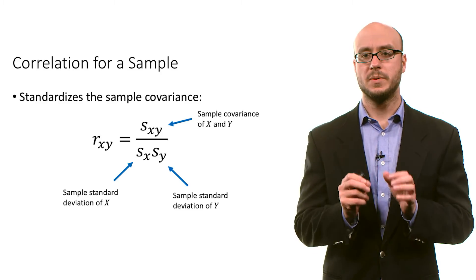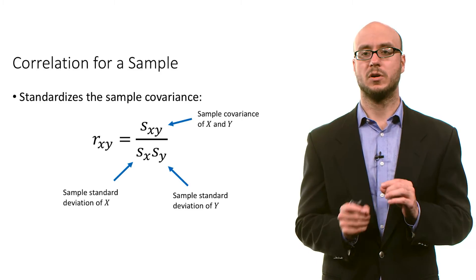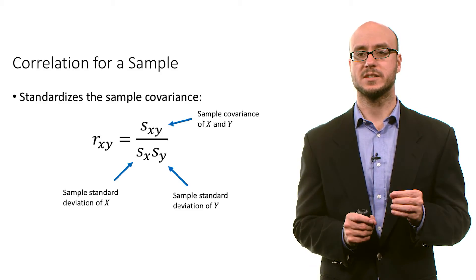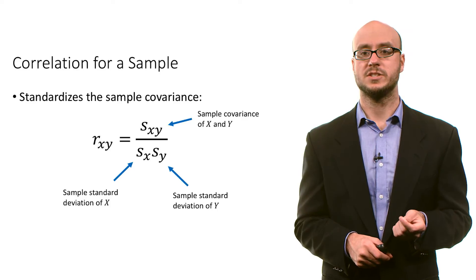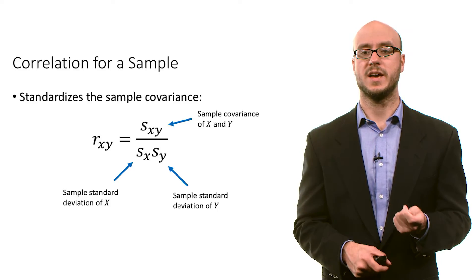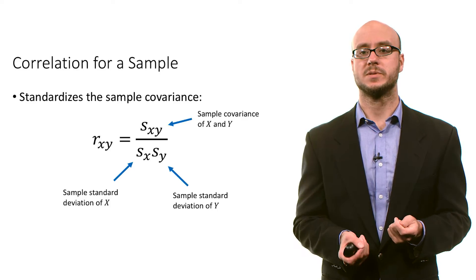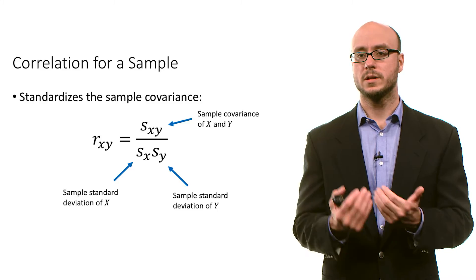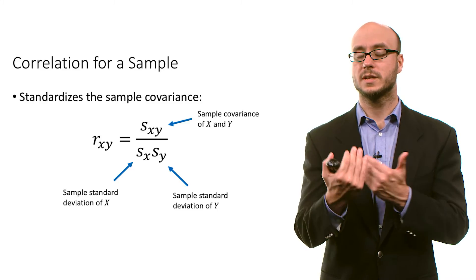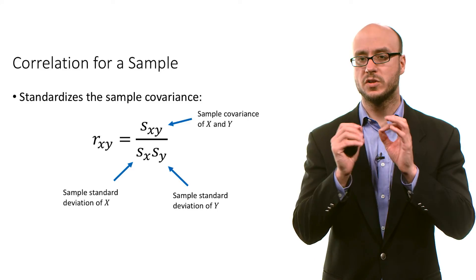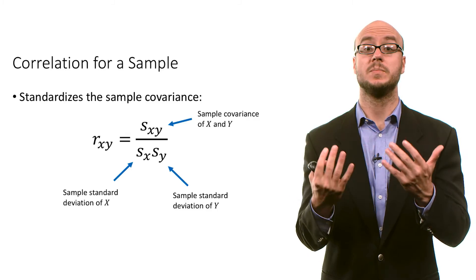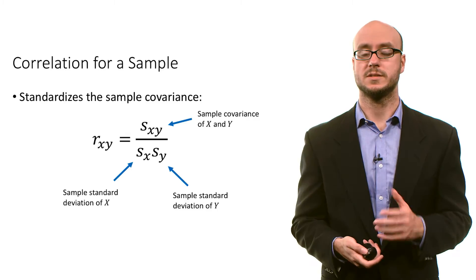Intuitively, keep in mind that the sample covariance is expressed in units of x and y, the standard deviation is expressed in units of x, and the sample standard deviation is expressed in units of y. Those units cancel each other out, so that the correlation ends up being unitless.